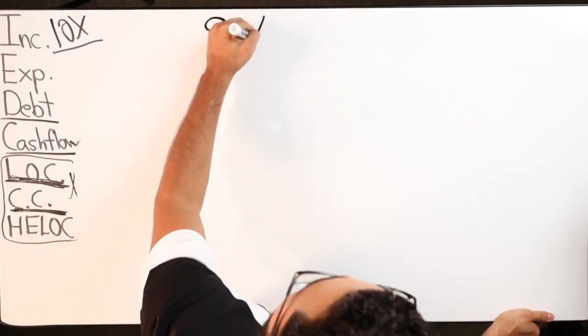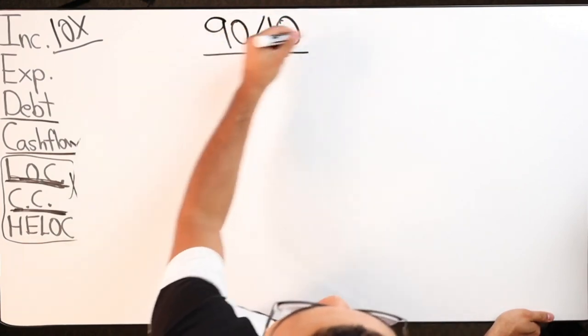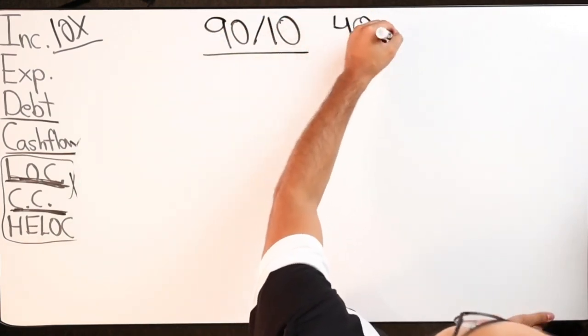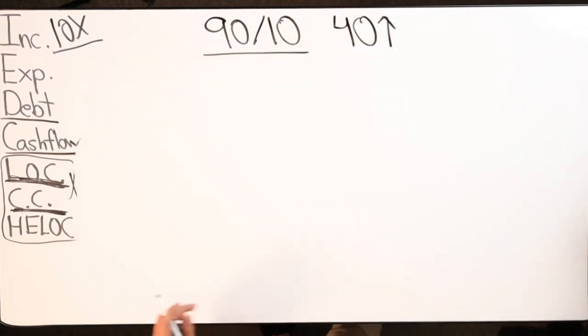I typically always do 90-10 splits because majority of my clients are over 40. That's the only reason why. My clients are over 40, almost all of them. And so the older you get, the more expensive insurance becomes. So the last thing I want to be doing is raising that insurance cost. I really want to keep that as low as possible.